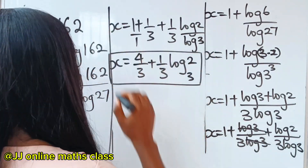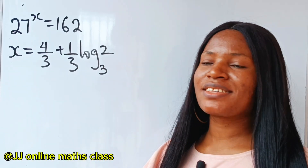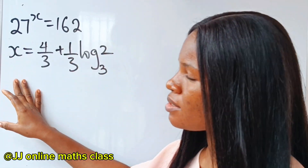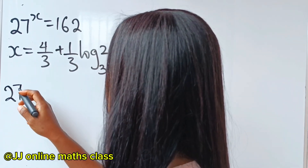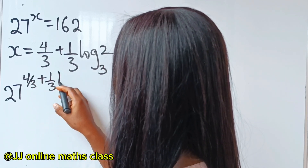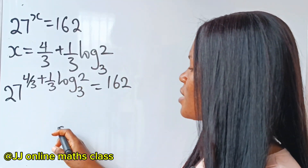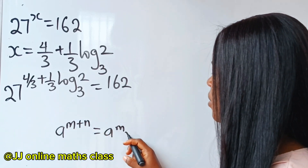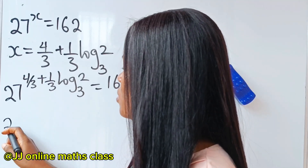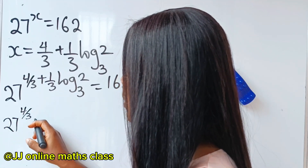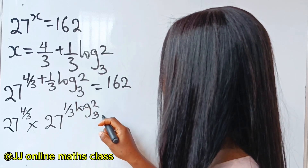This is our value of x. Now we substitute it back into the original equation to prove that what we got is right. So we write 27 to the power of 4 over 3 plus 1 over 3 log base 3 of 2, and this should equal 162. Recalling that a to the power of m plus n equals a to the power of m multiplied by a to the power of n, we split this as 27 to the power of 4 over 3 multiplied by 27 to the power of 1 over 3 log base 3 of 2, equal to 162.